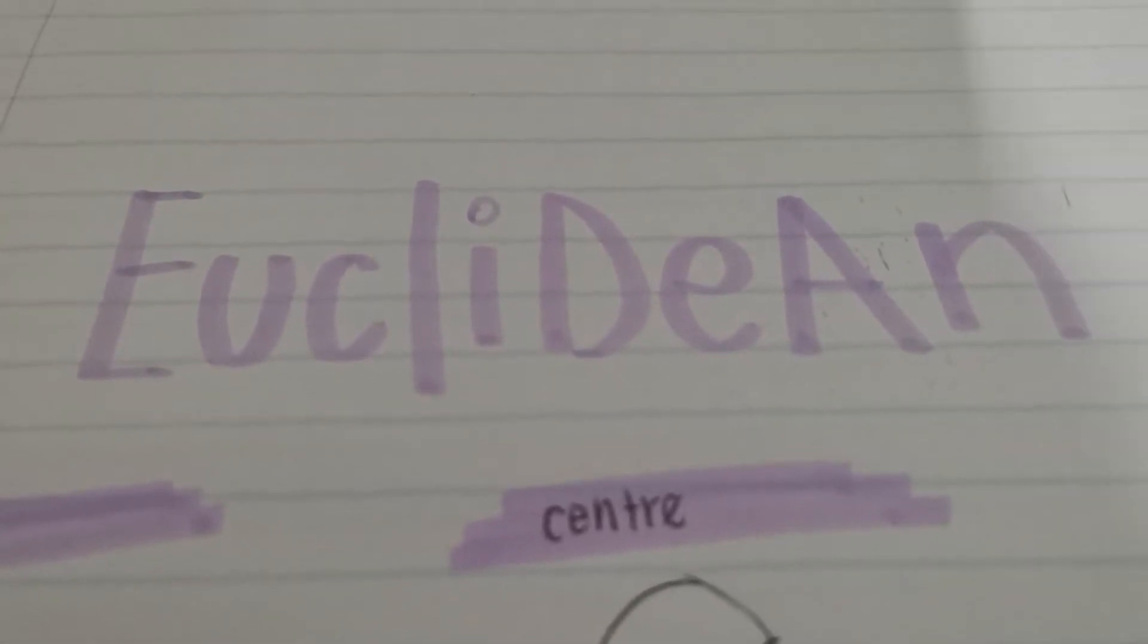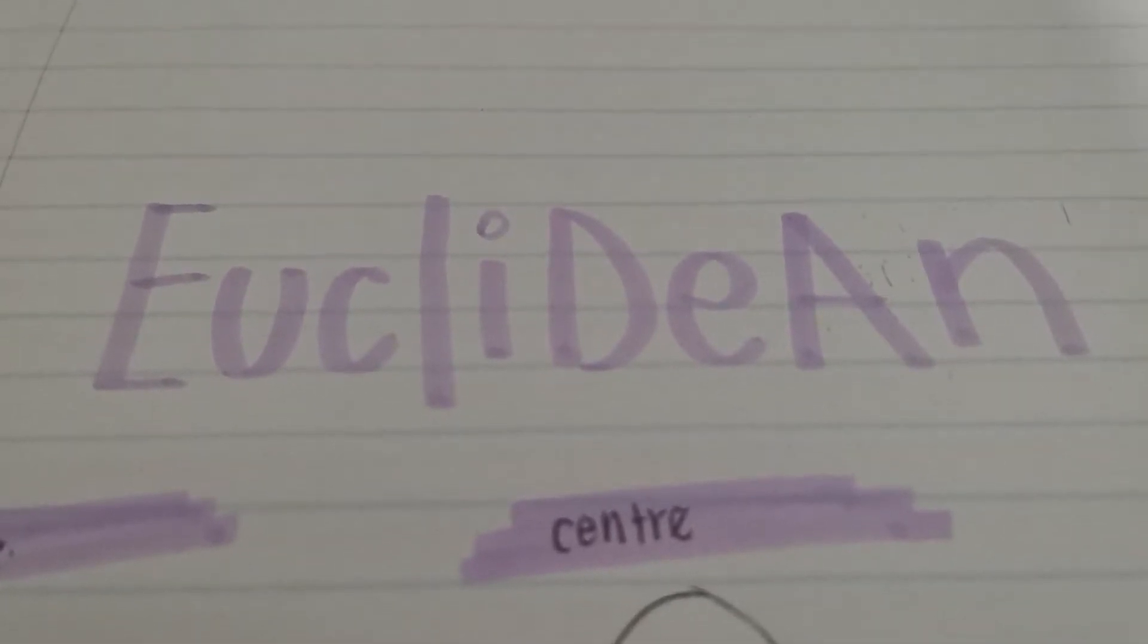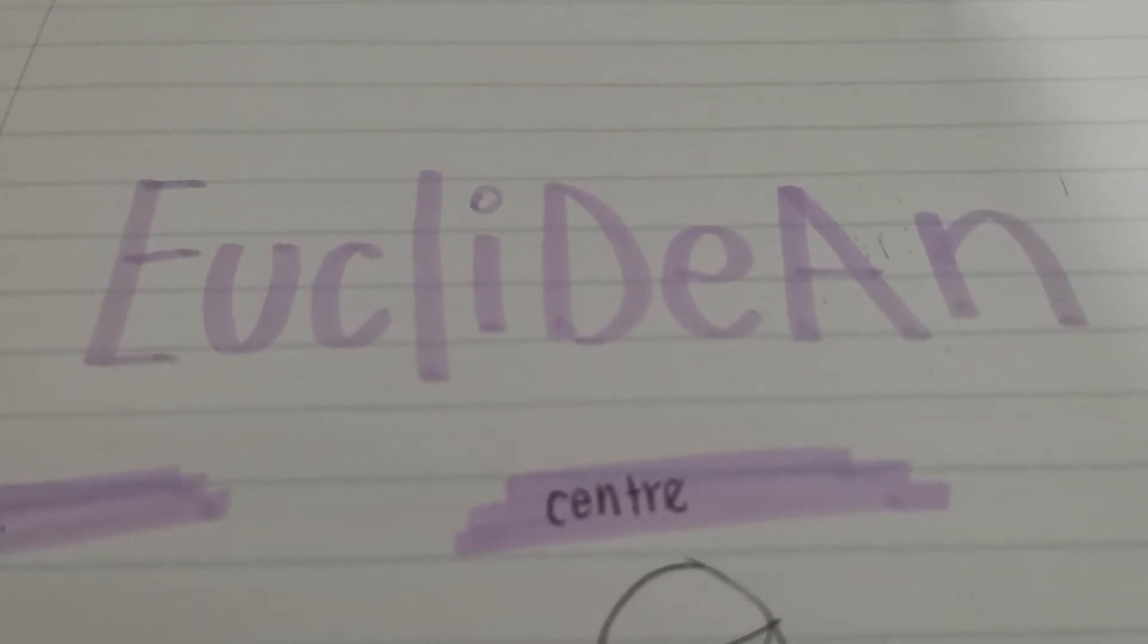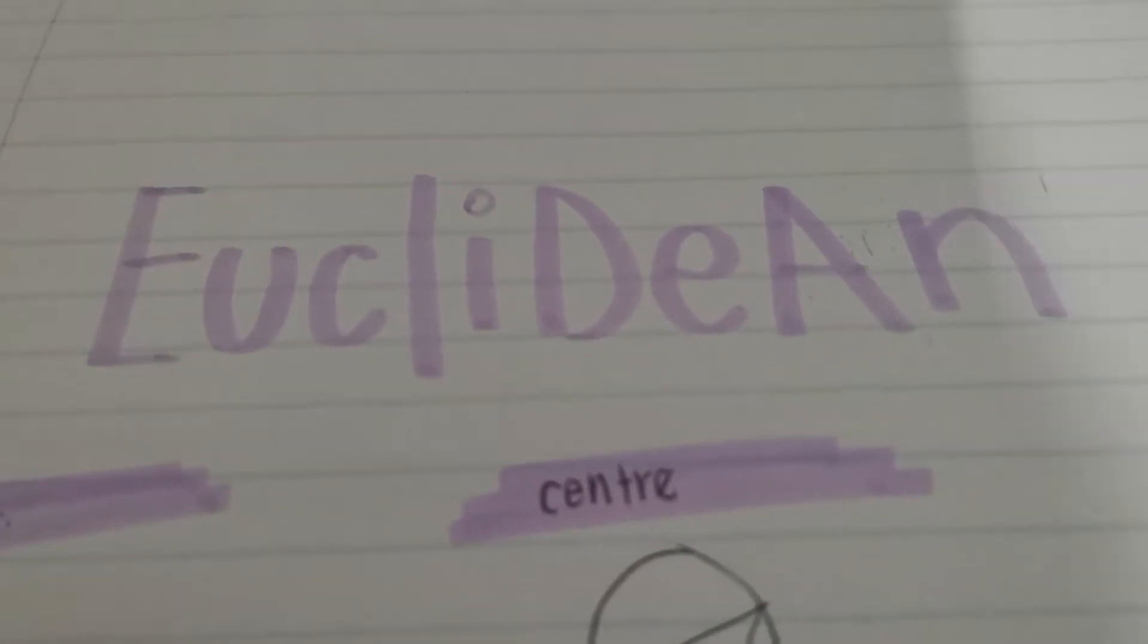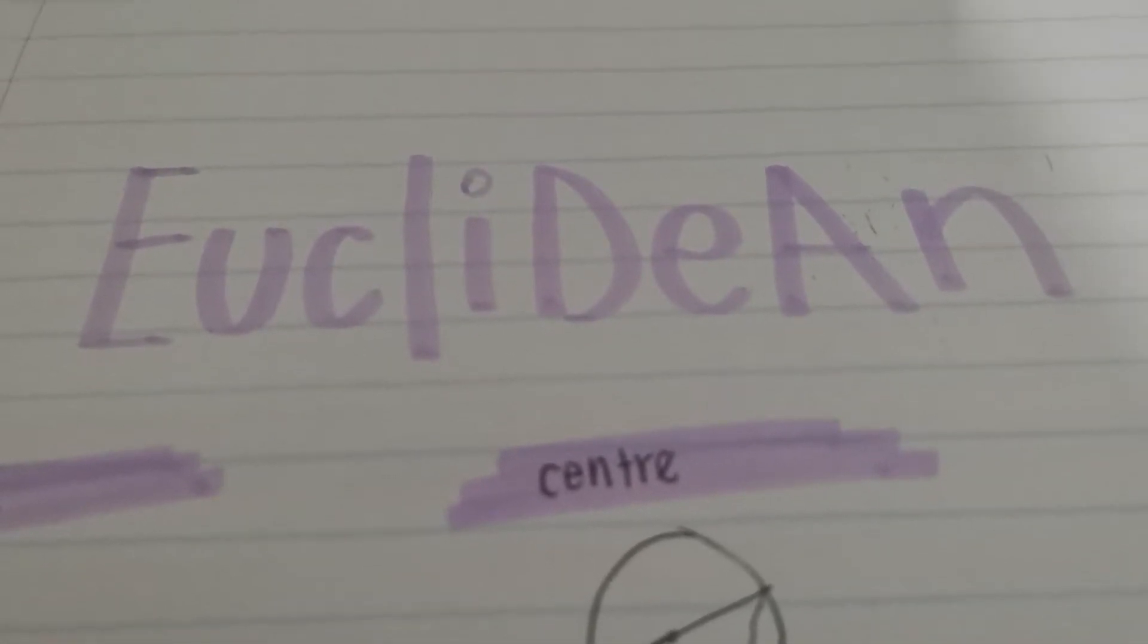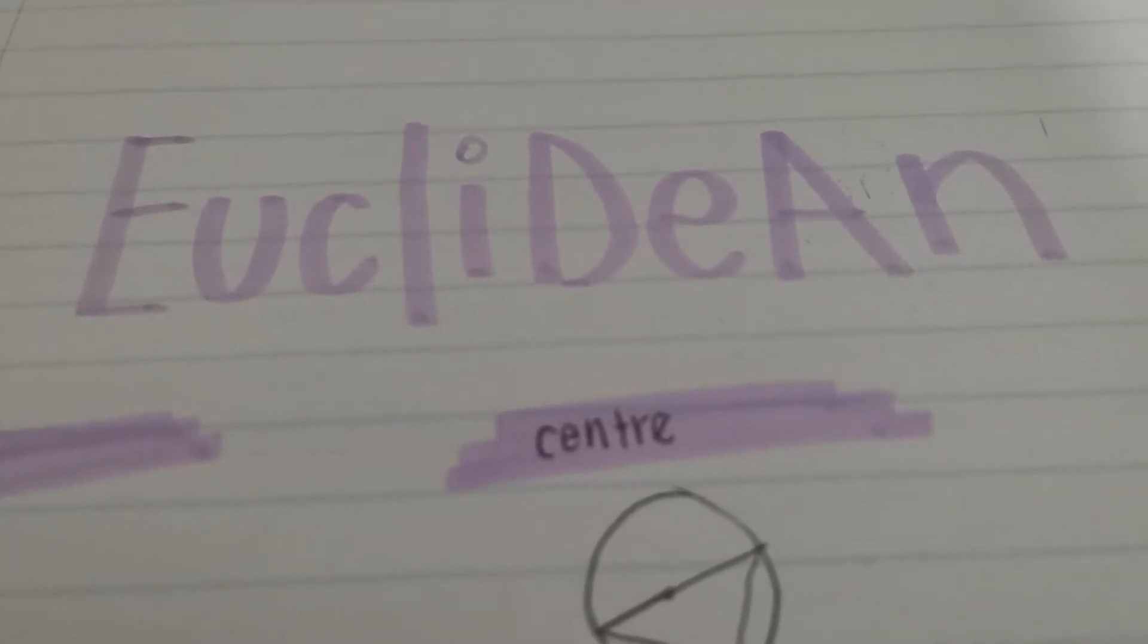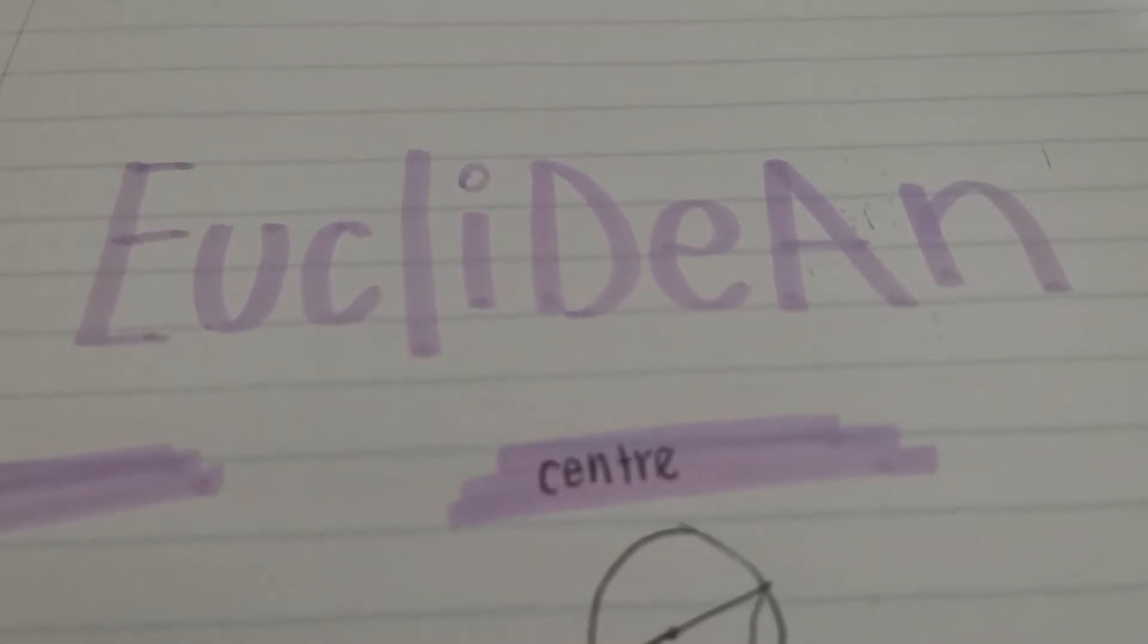Create a formula sheet for yourself. You guys know in matric, you're going to get a formula sheet in your prelims and finals. But what happens if there isn't a formula on there that you learned? Like, for example, in trigonometry, you know that sine, the ratio sine is opposite over hypotenuse. That's not written on there. So you would go and add that, for example.